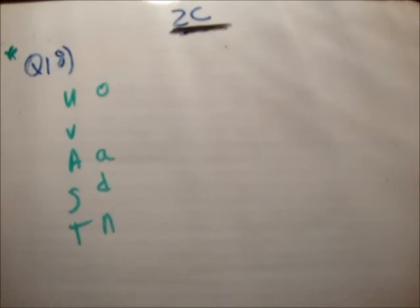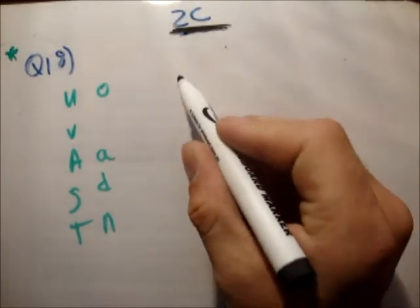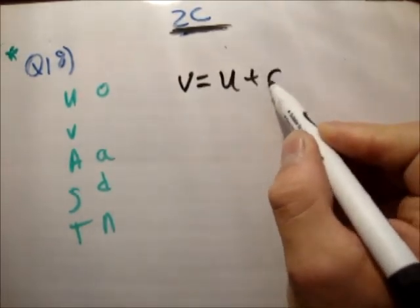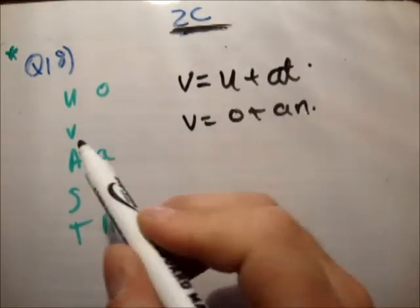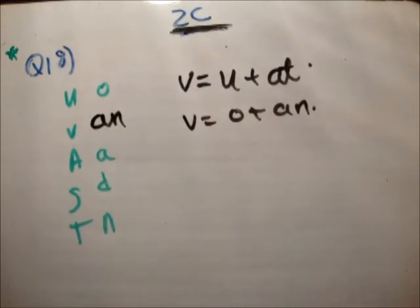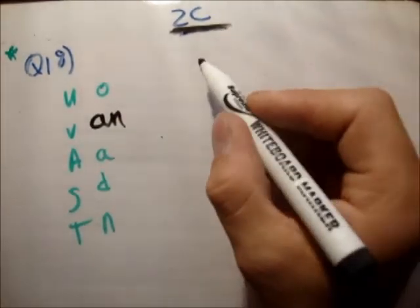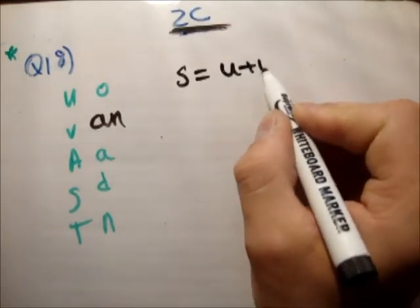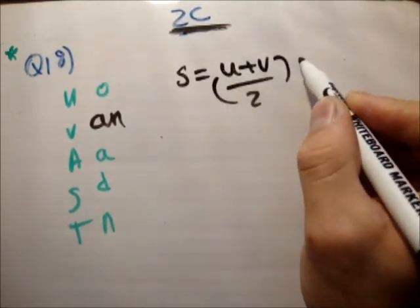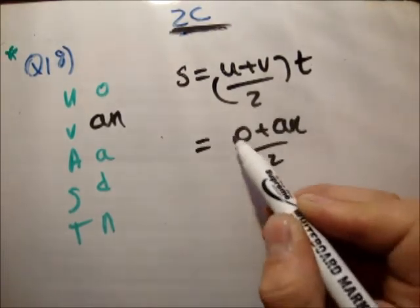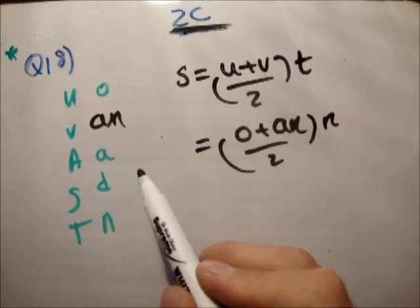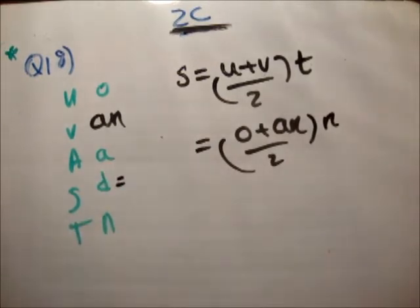So, let's fill out what we know. We'll say v is equal to u plus at. We're probably sick of using this formula at this stage. So, v is equal to 0 plus a times n. So, this is an. All right. Get the distance. s is equal to u plus v over 2 times t. Is equal to 0 plus an over 2 times n. So, it's a n squared over 2.